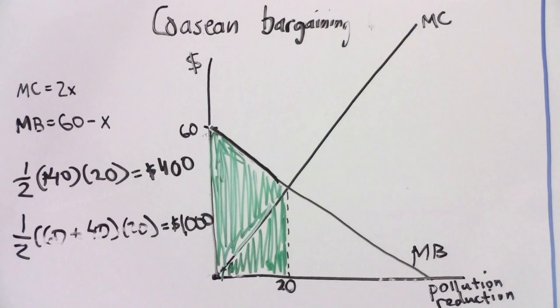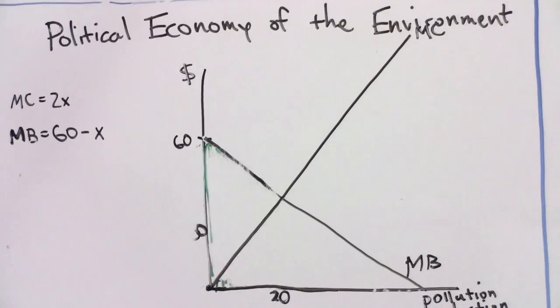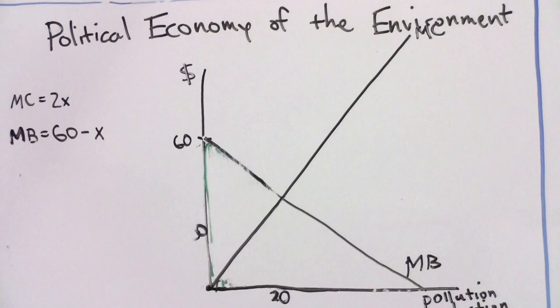But that isn't the only problem with the Coase theorem. Even our example, in which there are just two people so bargaining is nearly costless, illustrates important aspects of the political economy of the environment. First, the Coase theorem suggests that your neighbor will end up polluting at the efficient level regardless of whether he initially has the right to pollute. But whether or not he has the right to pollute will affect you — if he has the right to pollute, he could charge you up to $1,000 to reduce pollution by 20 pounds. Second, it is crucial to recognize that within this framework both the benefits to you and the cost to your neighbor are measured in dollars. However, it isn't necessarily true that a dollar is worth the same to you as it is to your neighbor, especially if your incomes are quite different.